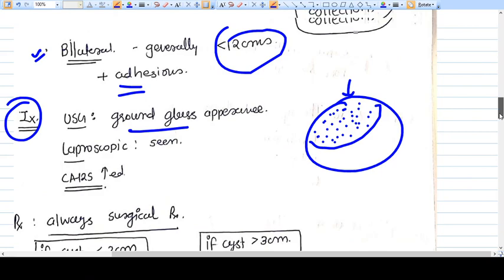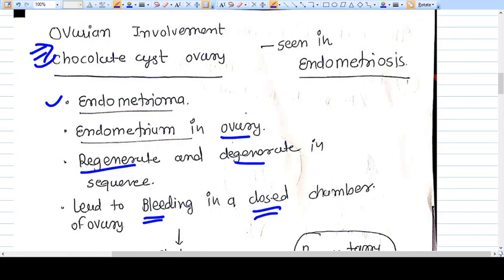We are continuing our series on endometriosis. In this video, we will discuss ovarian involvement, also called chocolate cyst of the ovary. The endometrial tissue is in the ovary now.